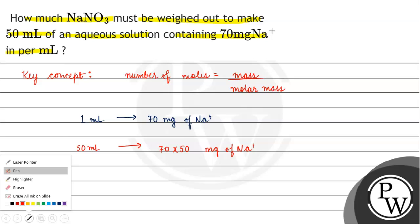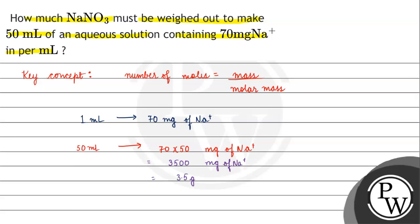So the weight of Na+ will be 3500 mg. If we convert it to grams, it will be 3.5 grams of Na+.